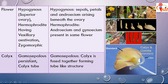The condition of calyx is fused, forming a tube-like structure called the calyx tube, inside which the gynoecium is enclosed. This condition of calyx is called gamosepalous because the sepals are fused together forming a tube-like structure.